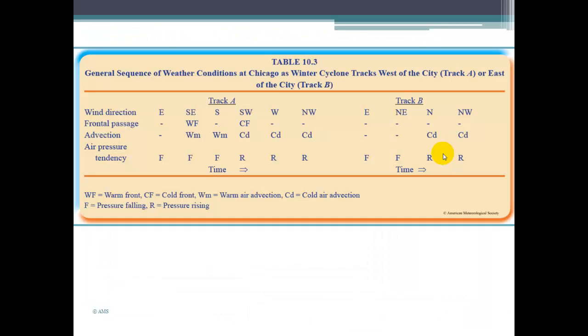This is a table, I know it's kind of hard to see here, but you can look at it in the book, that would show the weather conditions for Chicago depending on if it's track A or track B. So track A is here on the left, track B is here on the right. You'll see specific winds as the system begins to develop and move along. You're going to see the winds shift in a particular way depending on if it's track A or track B.